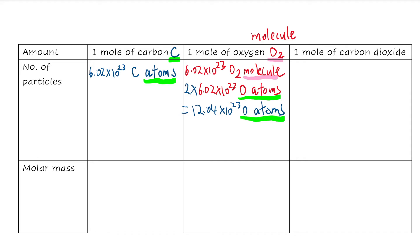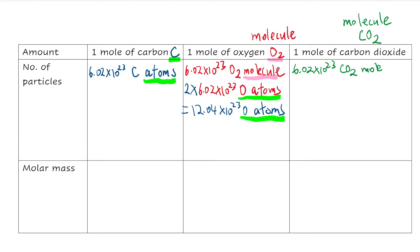The last substance is carbon dioxide. Its chemical formula is CO2, and this is also a molecule. In one mole of carbon dioxide there are 6.02 times 10 to the power 23 CO2 molecules — it's not atoms, because CO2 does not exist as individual atoms in its normal state.